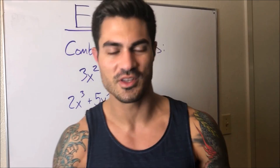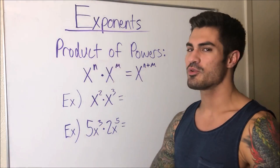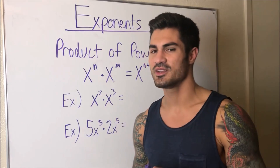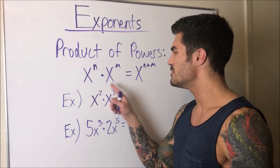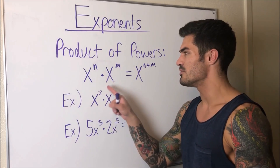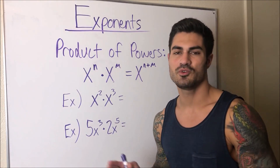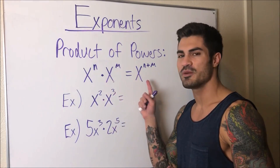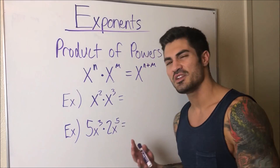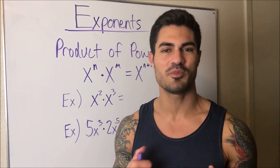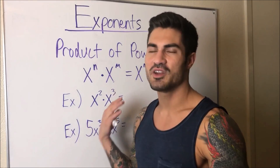Now let's get into our first exponent law: the product of powers. You see the word 'product' and you think multiplication — you'd be exactly right. When we multiply two things with the same base, we simply add the exponents. The best way to learn these is not to memorize the formula, but to get a math intuition by doing practice problems so you can just do it without thinking of a formula.